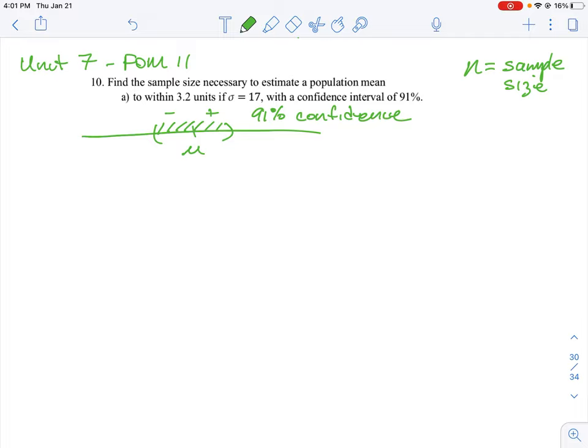We know a couple of things from the question. We know that the error, the magnitude of the error, is 3.2 units. Think of that as being the width of the interval itself centered around the population mean.